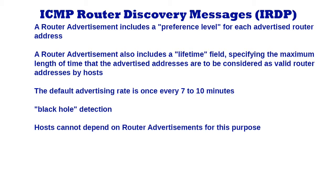Hosts cannot depend on router advertisements for this purpose since they may be unavailable or administratively disabled on any particular link or from any particular router. Therefore, the default advertising rate and lifetime values were chosen simply to make the load imposed on links and hosts by the periodic multicast advertisements negligible even when there are many routers present. However, a network administrator who wishes to employ advertisements as a supplemental black hole detection mechanism is free to configure smaller values.